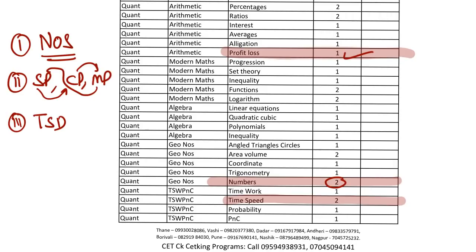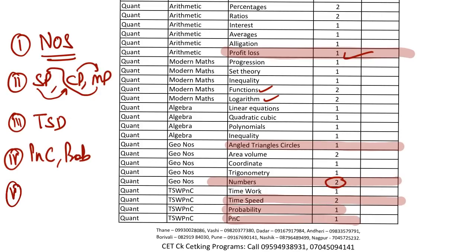Number four on the list — I am combining Permutation & Combination and Probability into one topic. Trust me, functions and logarithms are still doable compared to this topic. And number five on my list, without any question, is Geometry — angles, triangles, and circles. The main fundamental problem with this chapter is there is no end to it.